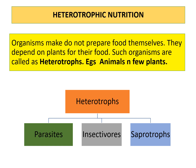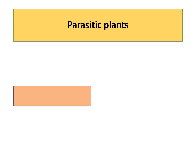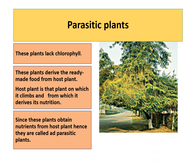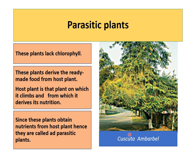These plants are: parasitic plants, insectivorous plants, and saprotrophic plants. Parasitic plants generally lack chlorophyll, so they derive ready-made food from a host plant. An example is Cuscuta, which is commonly called Amarbel. This plant climbs on the host plant and derives all its nutrients from it. Since these plants obtain nutrients from the host plant, they are called parasitic plants.